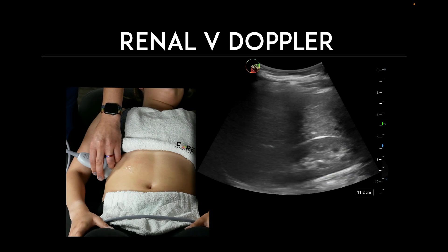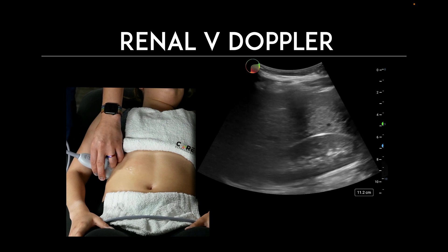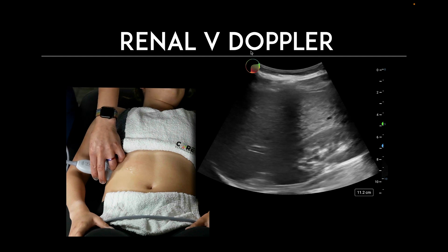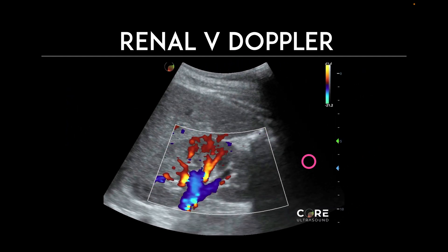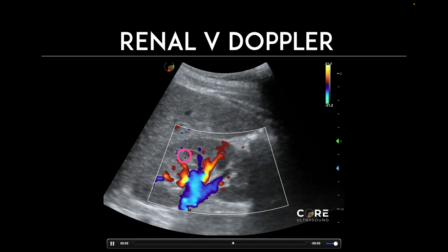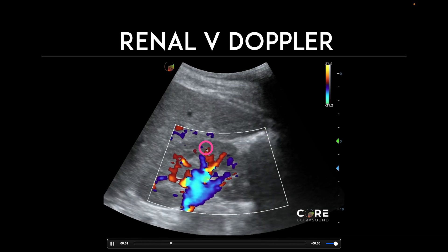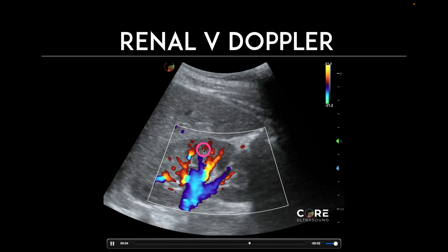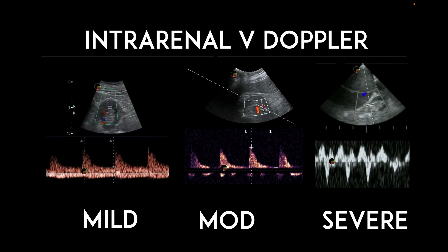The last component is looking at the renal vein Doppler waveform. We're going to get our best view of a kidney, decrease the depth to focus in on it, and put on color flow Doppler. We look for an area out in the periphery, past the pyramids — those hypoechoic structures — where we see venous and arterial waveforms close to each other, and place the Doppler gate right there. The mild category shows a normal waveform, but remember, the IVC is already plump, so there is already some congestion.